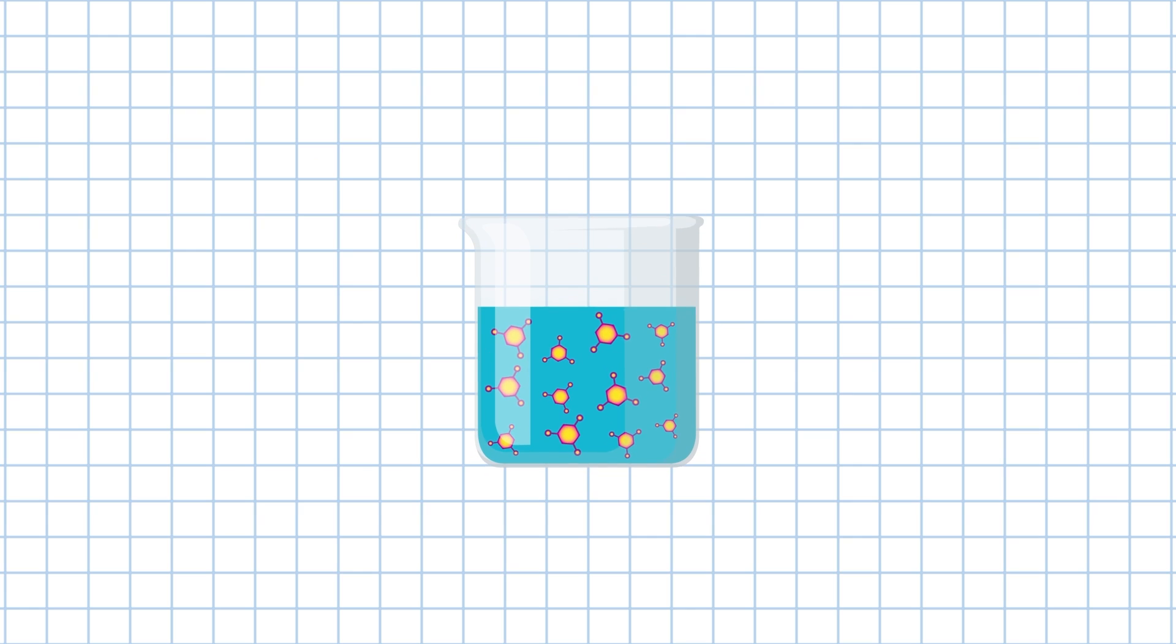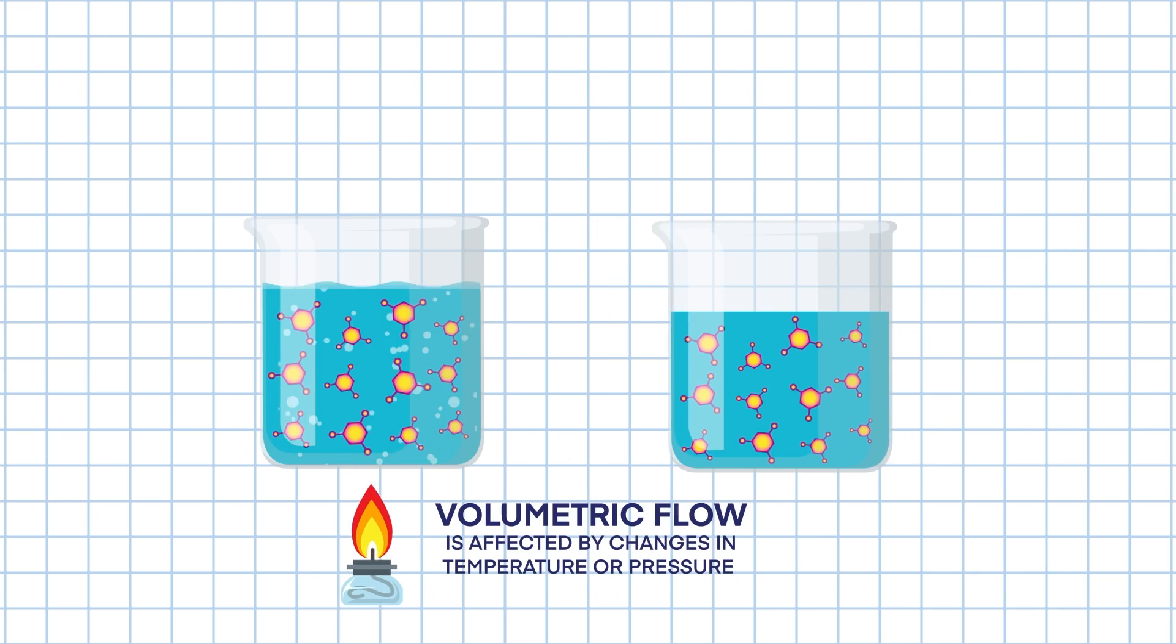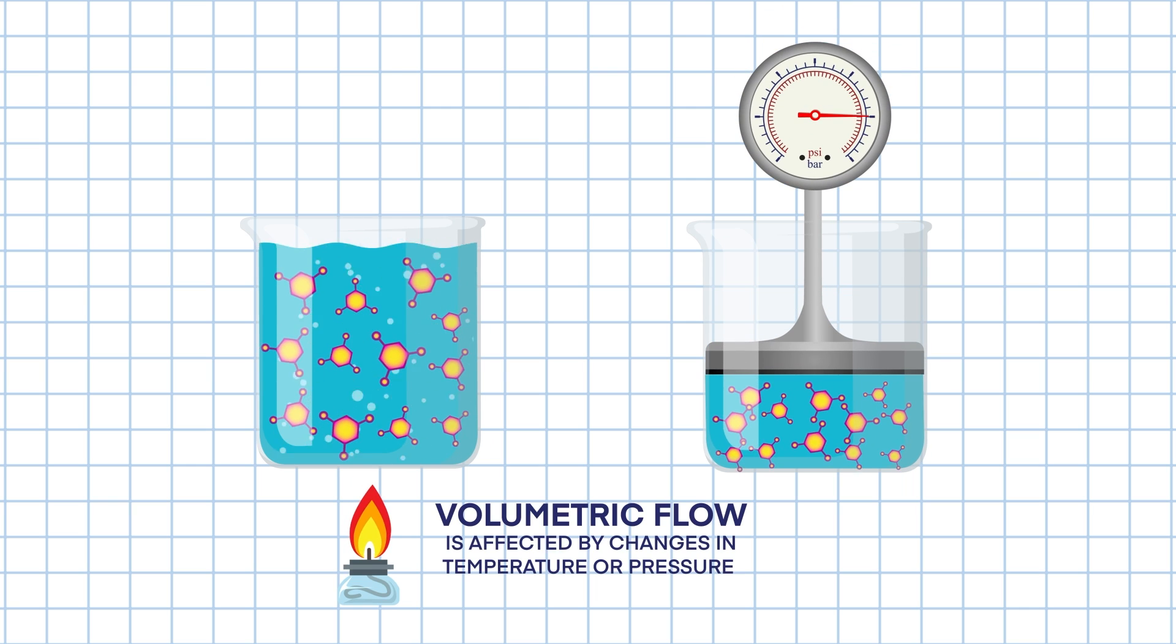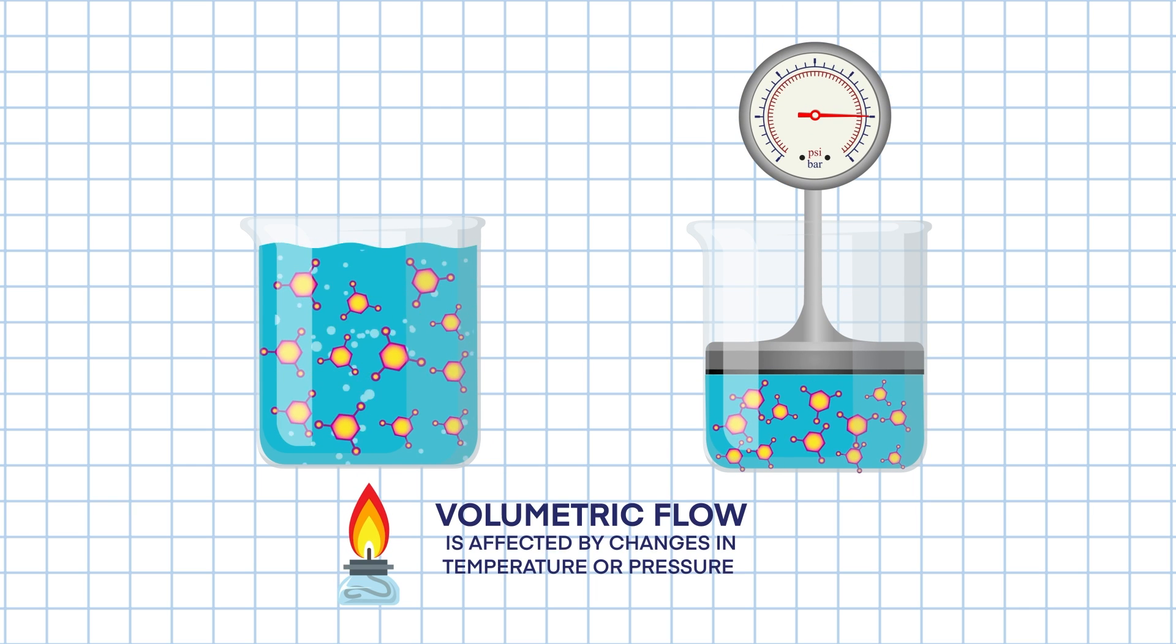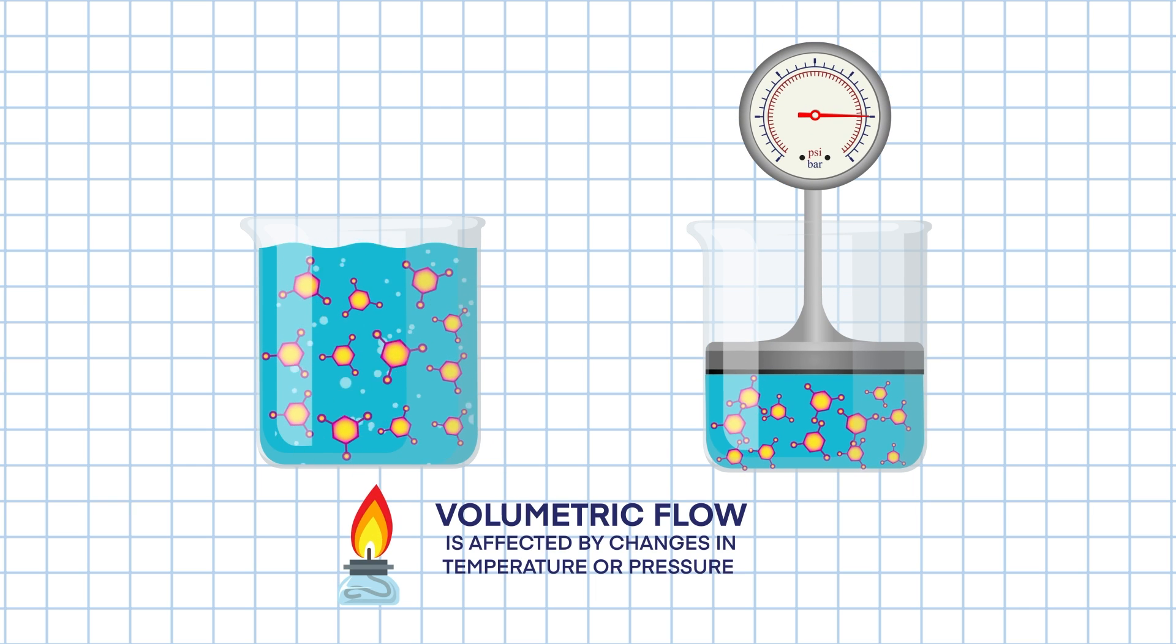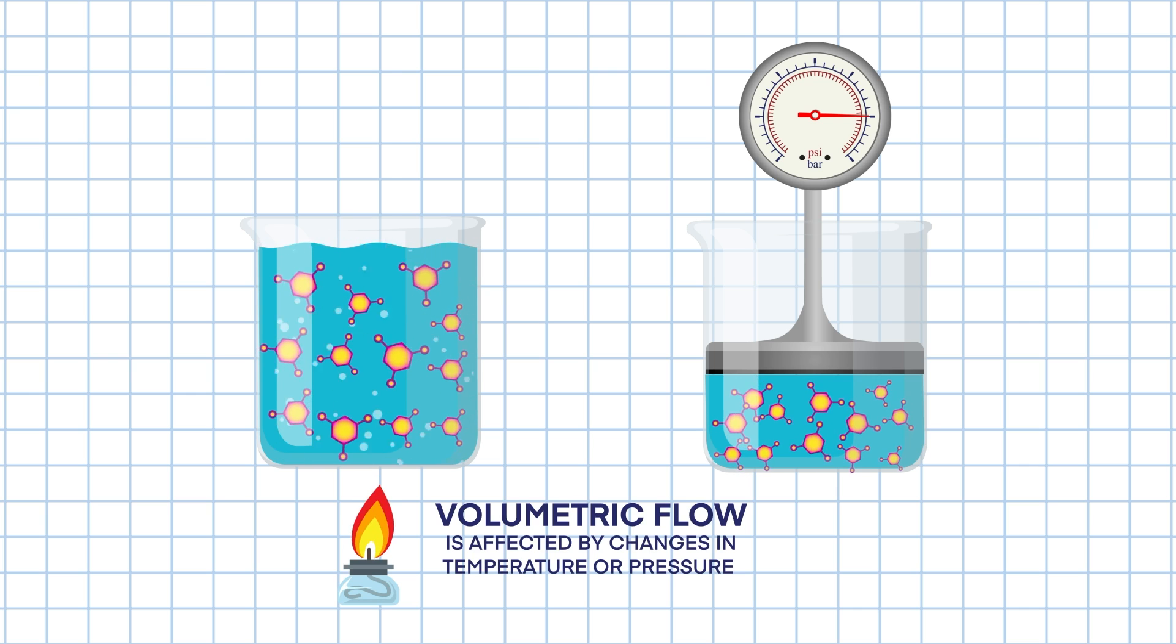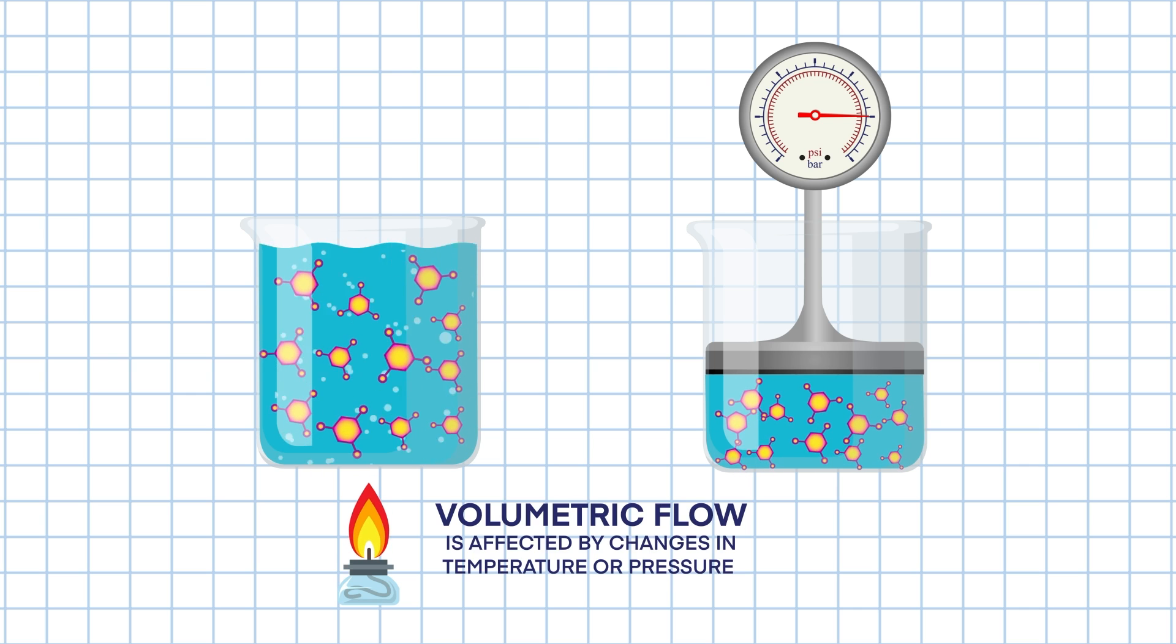And unlike mass flow, the volumetric flow of a substance is affected by changes in temperature and or pressure, since temperature and pressure fluctuations can change the density of the substance. Hence, when measuring volumetric flow, changes in temperature and pressure of a substance at the measurement site should be compensated for.